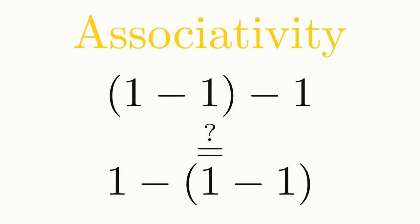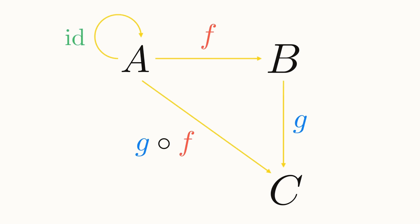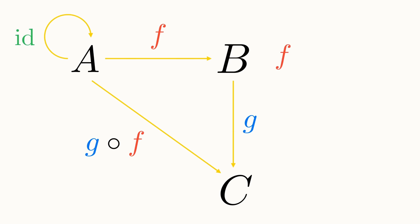Finally, since we can no longer define the identity arrow in terms of sets and elements, we'll define it as the unit of composition. Or in other words, we require that every object has a looped arrow that simply does nothing when you compose with it.